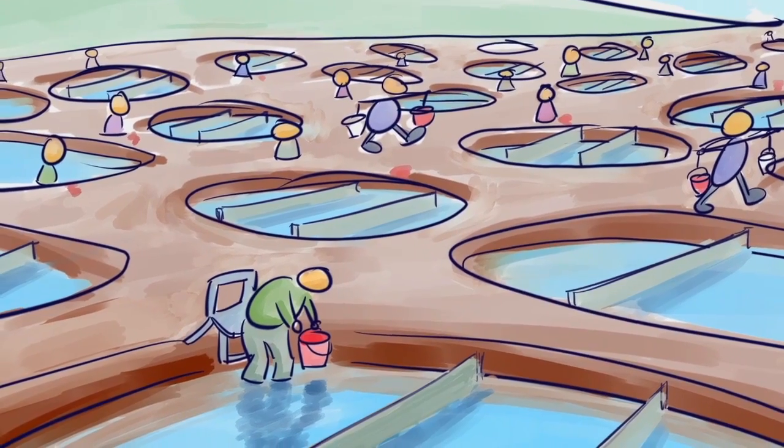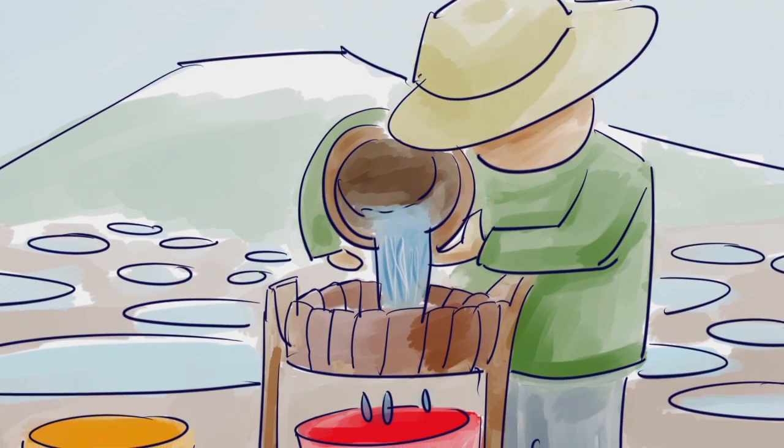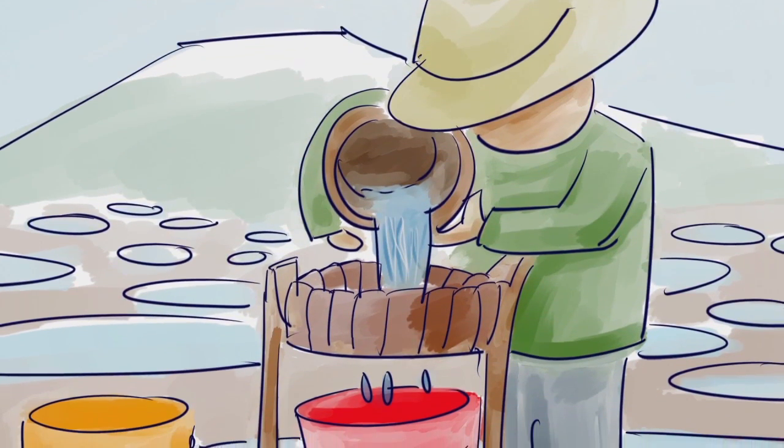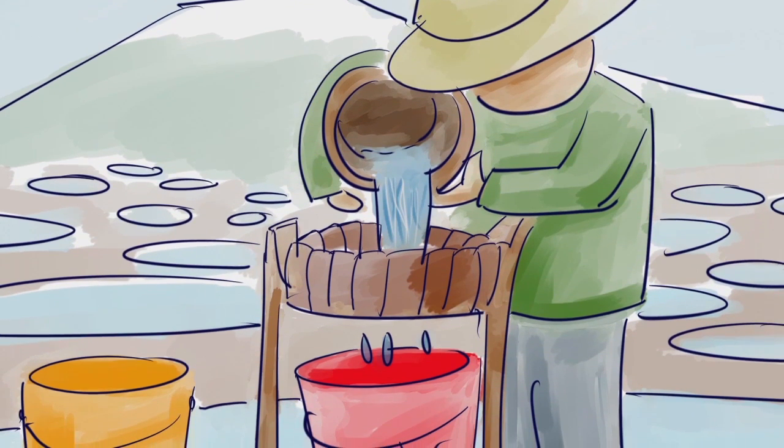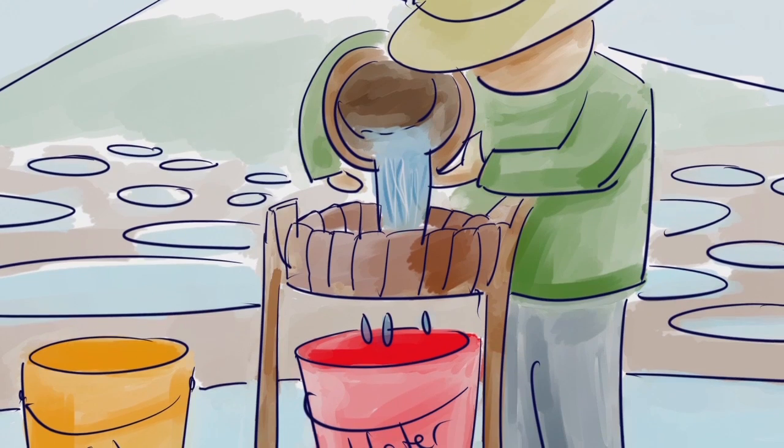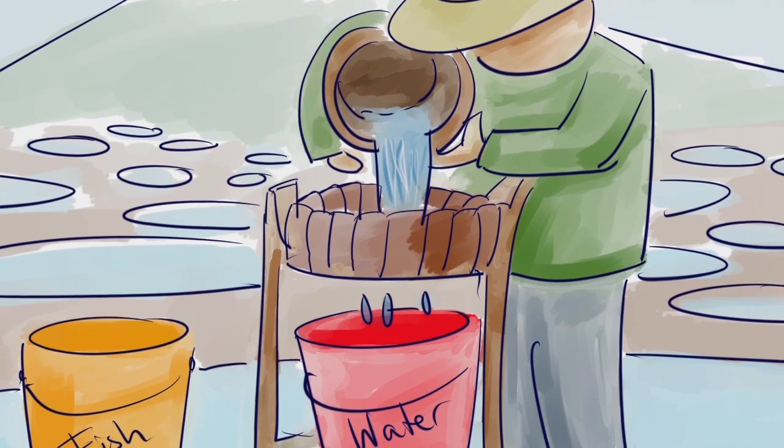This person was called a mapper. The villagers needed three things: fish, salt, and fresh water. So the mappers would be given three buckets and would slowly filter the water and put fish, salt, and pure water in each of the three buckets.